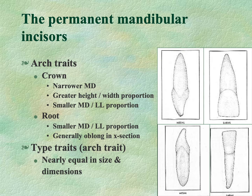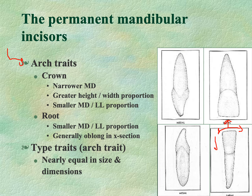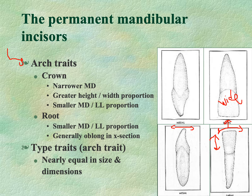The arch traits of mandibular incisors: they are narrower mesiodistally compared to maxillary incisors, have a greater height-to-width proportion (they are long rather than wide), have a smaller mesiodistal to labiolingual proportion (meaning they are thicker labiolingually), and the root is also smaller mesiodistally relative to labiolingually. They are generally oblong in cross-section. The type trait: the central and lateral mandibular incisors are nearly equal in size and dimensions.